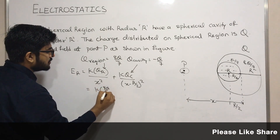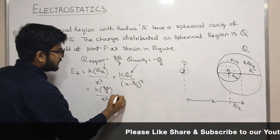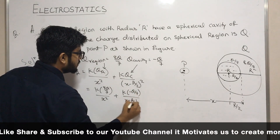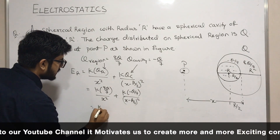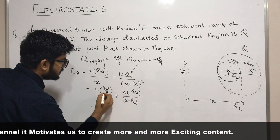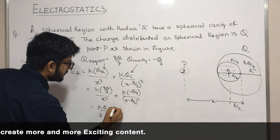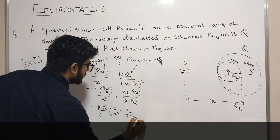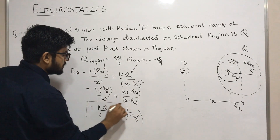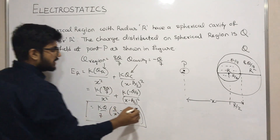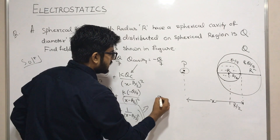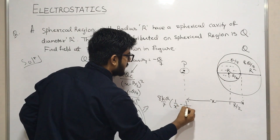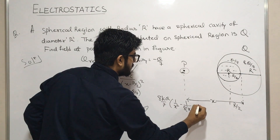Substituting values: E = k·(8q/7)/x² + k·(−q/7)/(x − r/2)². Taking k/7 as common: E = (k/7) · [8/x² − 1/(x − r/2)²]. This is the electric field at point p.